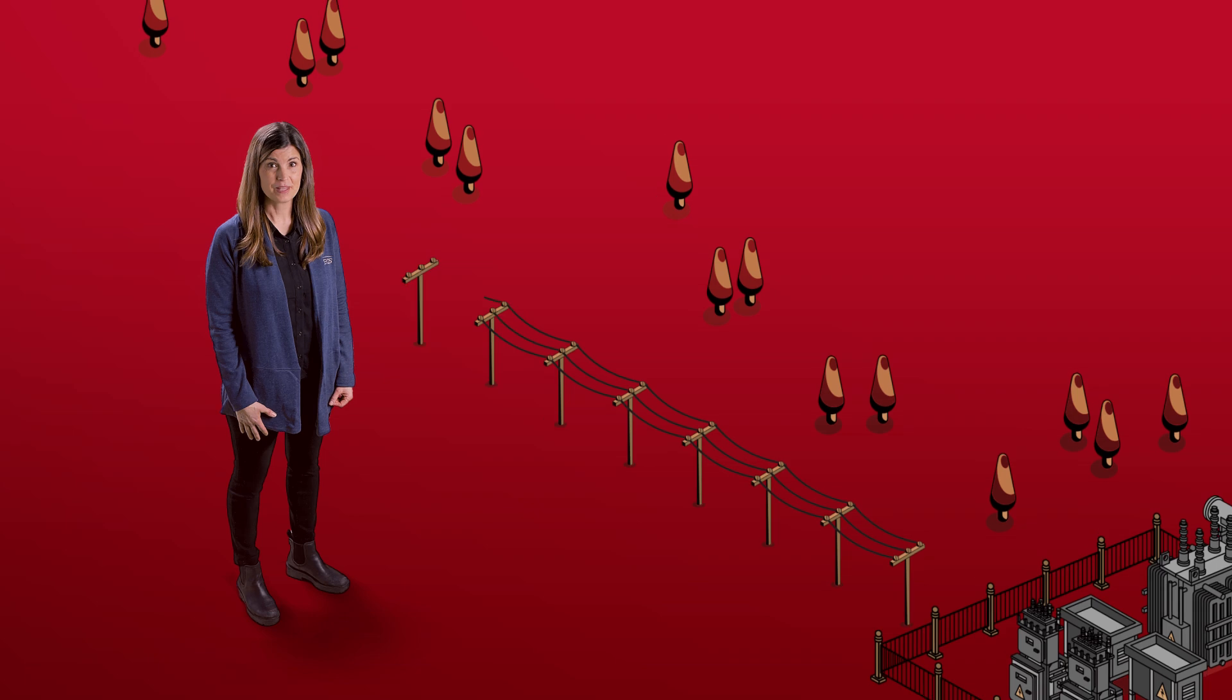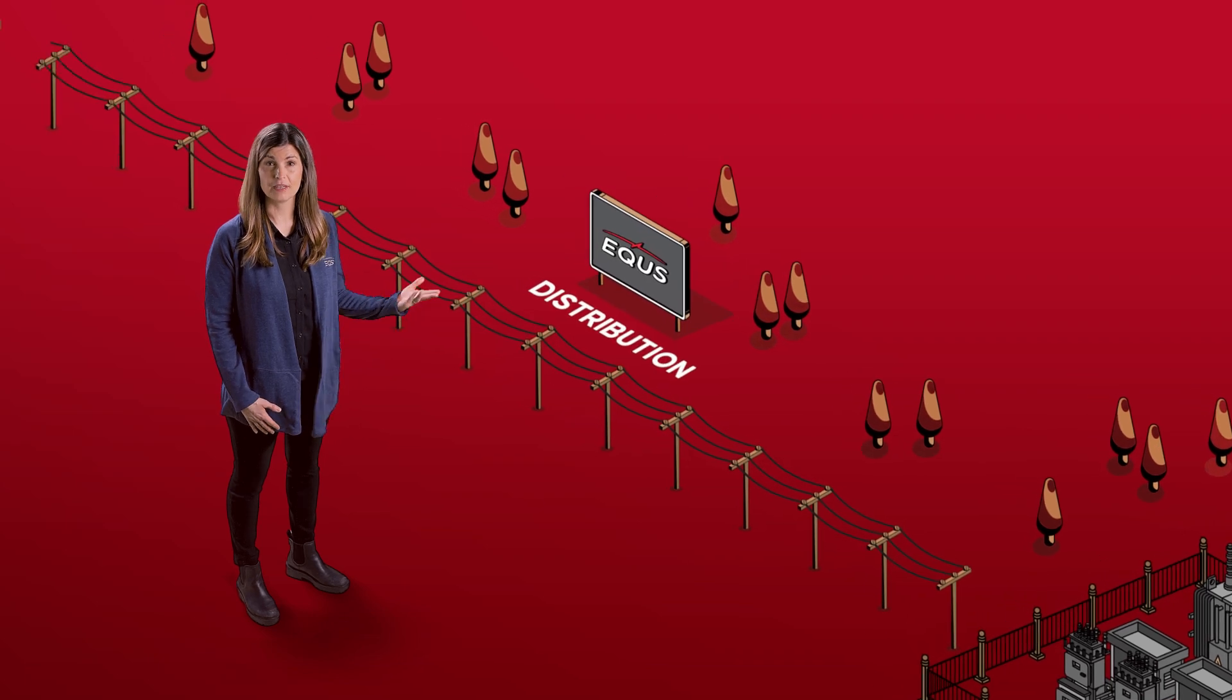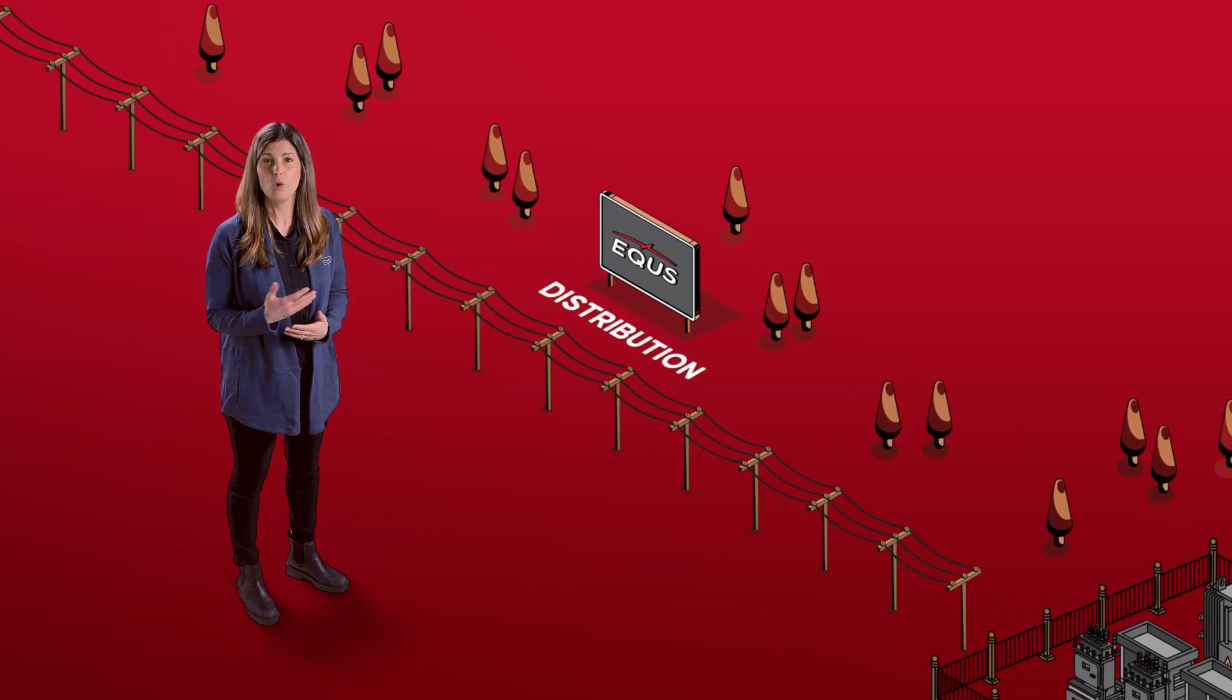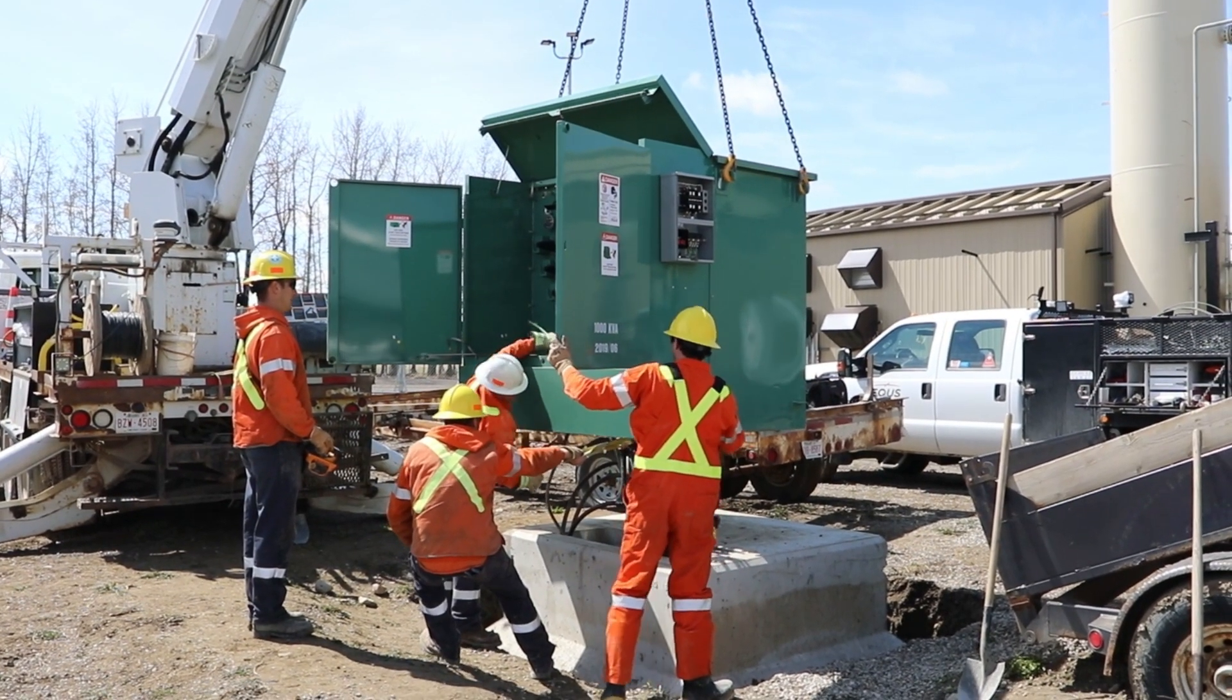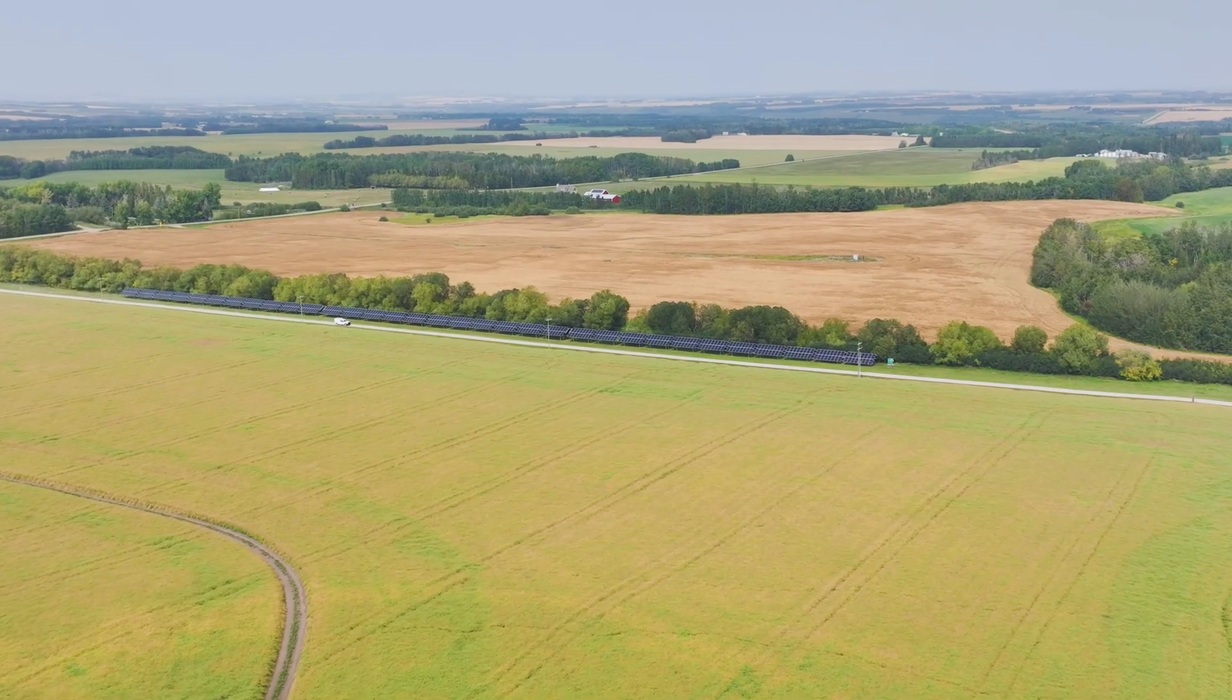Then EQUS takes over, managing the distribution network, a complex grid of poles and wires. We ensure this energy reaches even the most remote parts of rural Alberta.